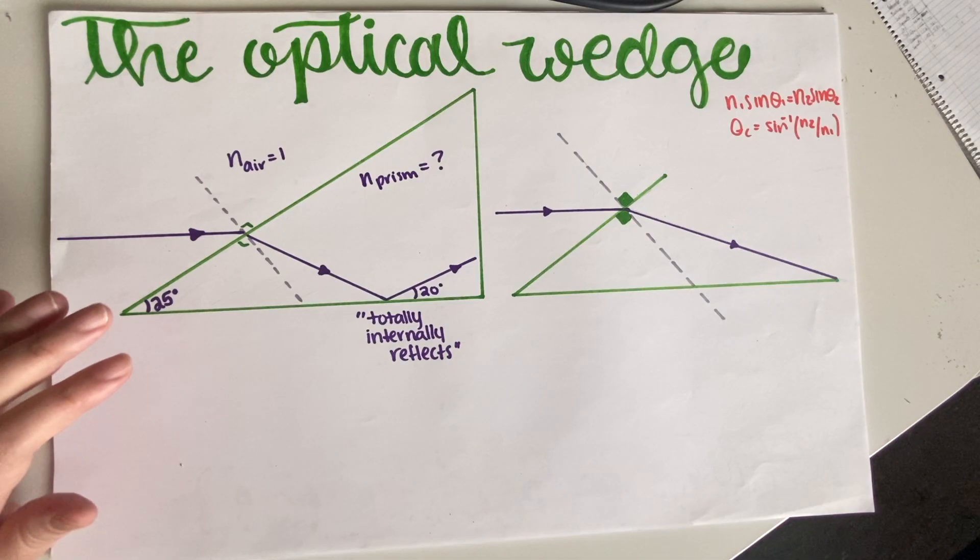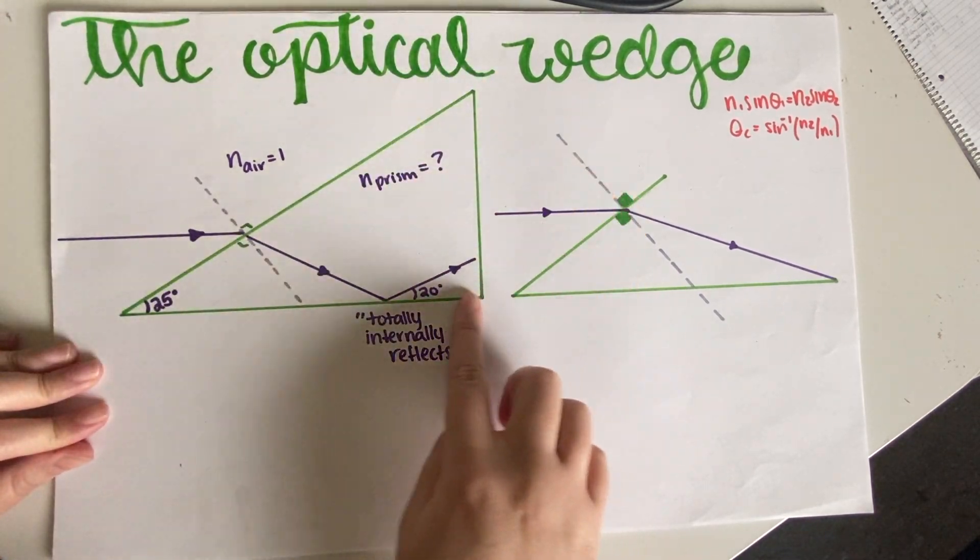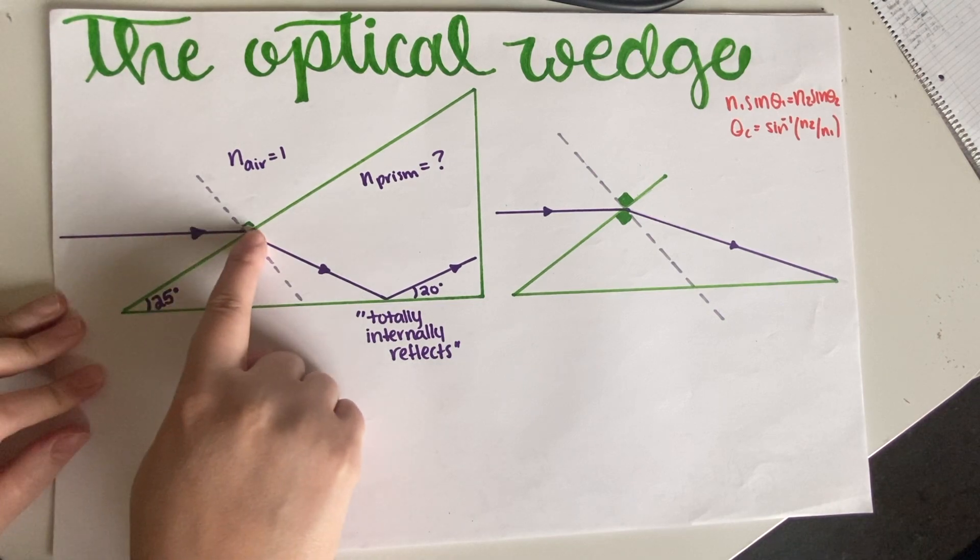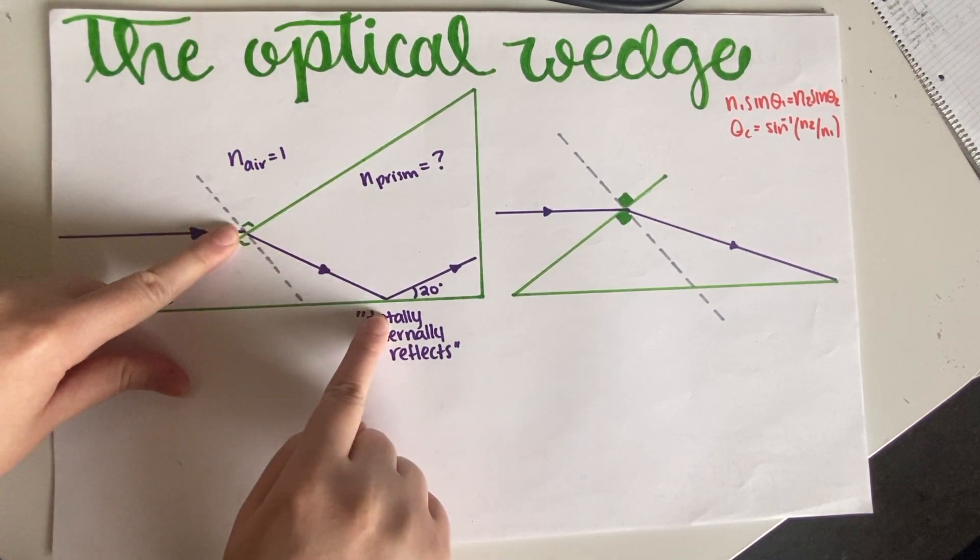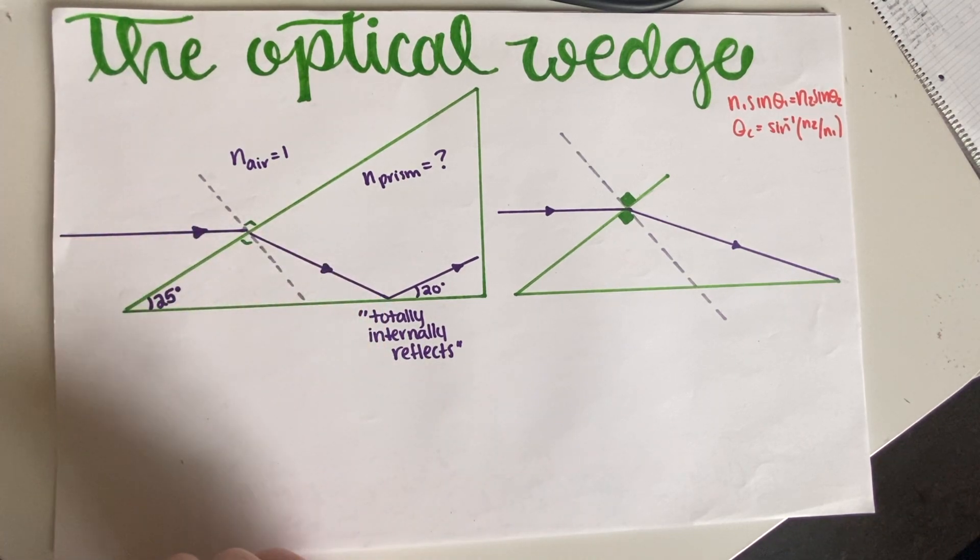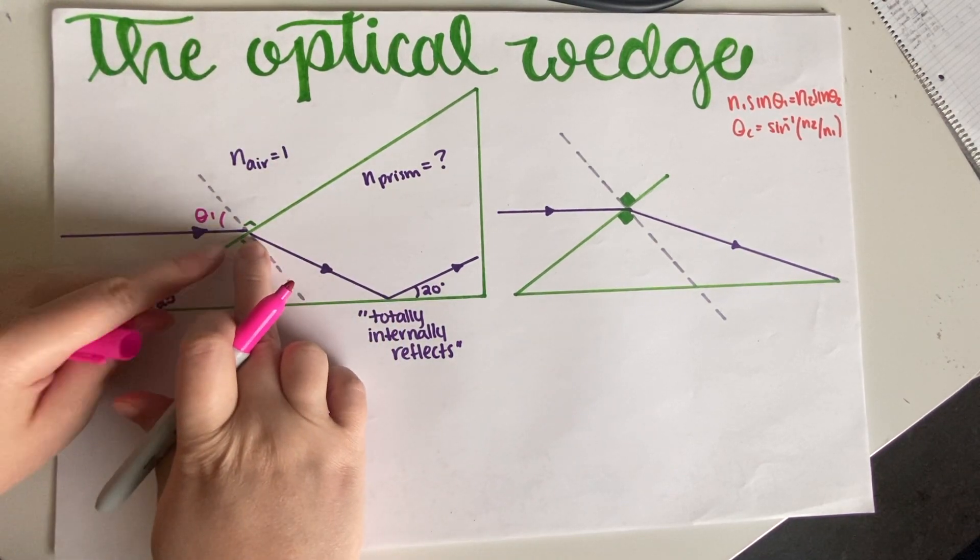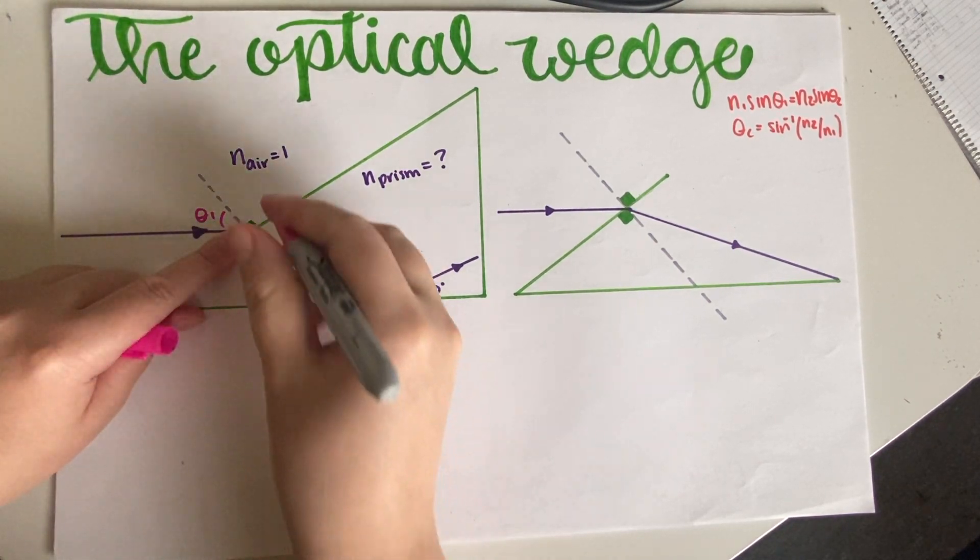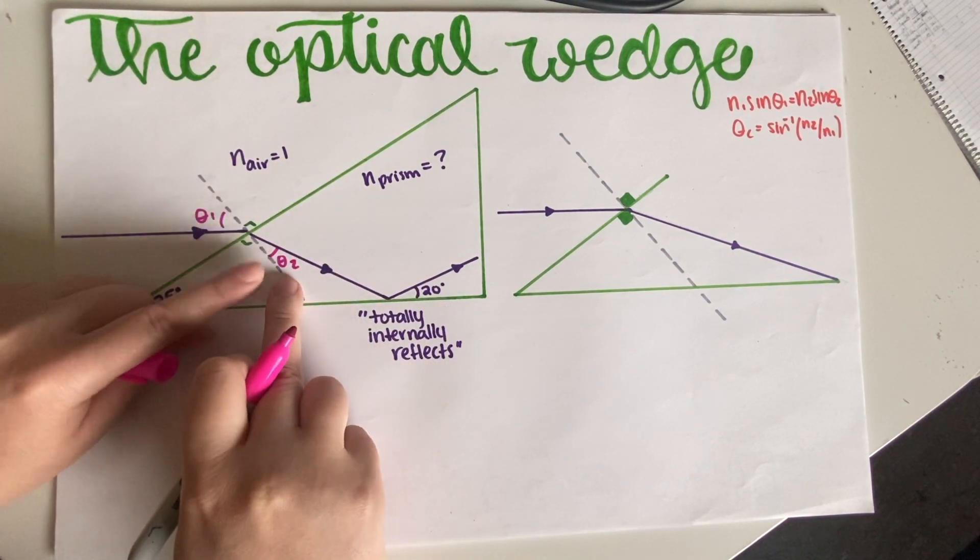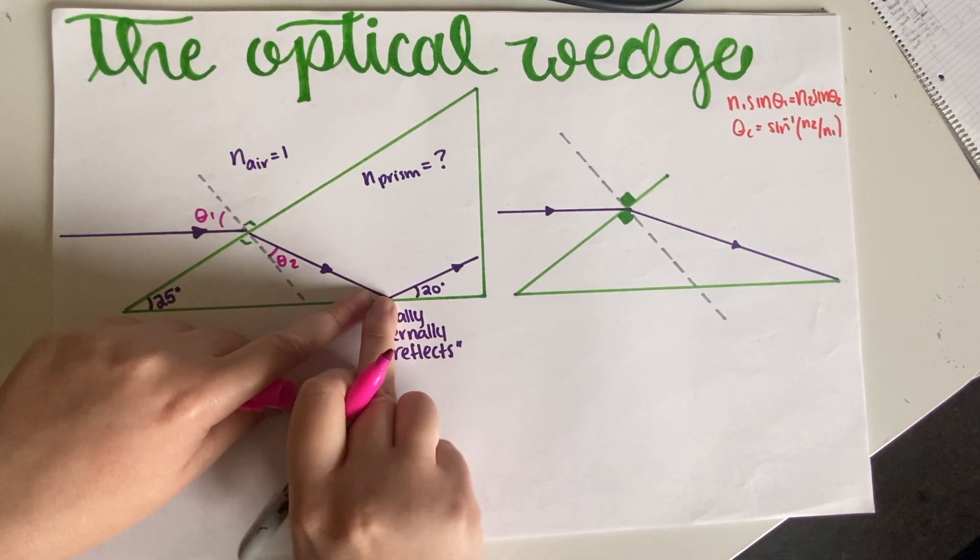As you can see, I have a little picture of the prism here. We basically have an incident ray of light over here. It hits, but we don't really know at which angle it hits, so I'm just going to go ahead and label this angle number one.